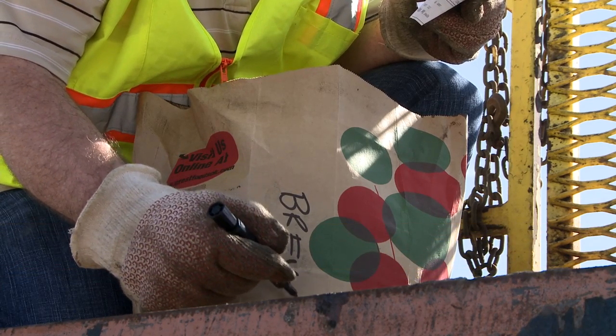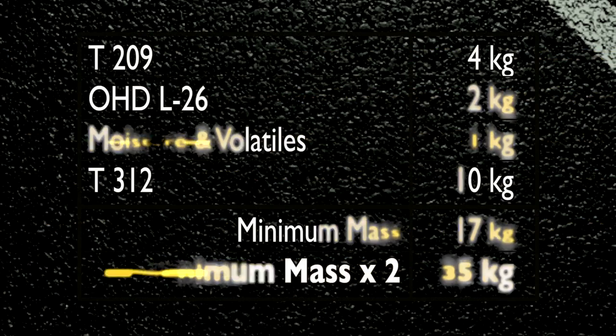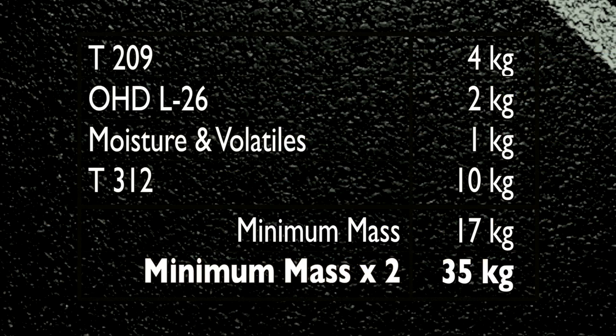For example, if you're obtaining a sample for specific gravity, bitumen content, moisture and volatiles, and SGC lab molds, you'll need about 35 kilograms of material.